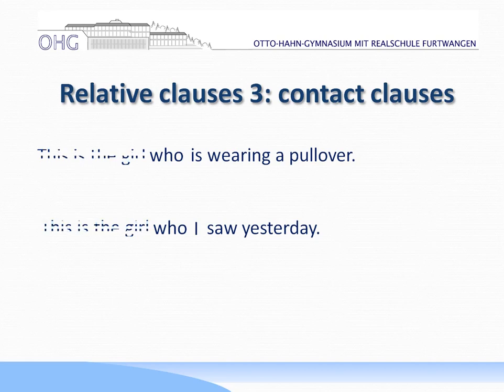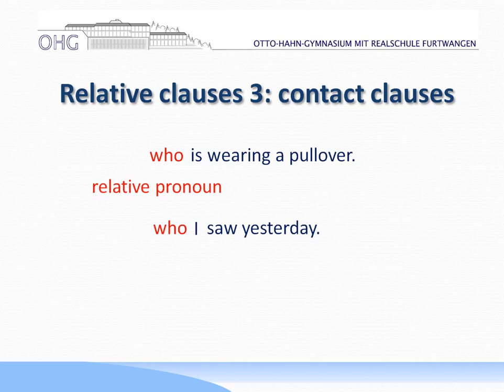If we only look at the relative clause, we have 'who is wearing a pullover' and 'who I saw yesterday.' Both are introduced by the relative pronoun, which is 'who.' And if we look more closely at the subject: in the second sentence it's 'I,' and in the first it's also 'who' — so 'who' is both relative pronoun and subject.